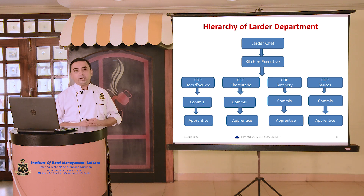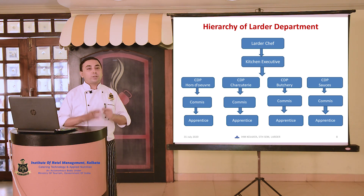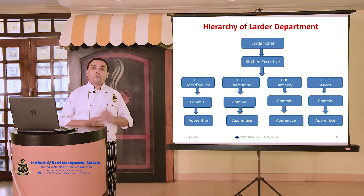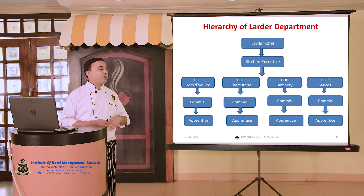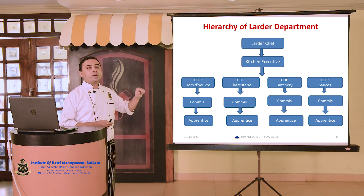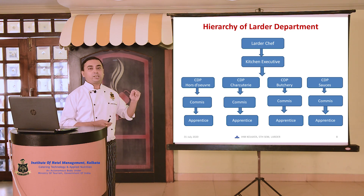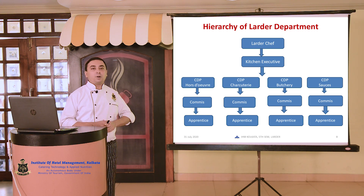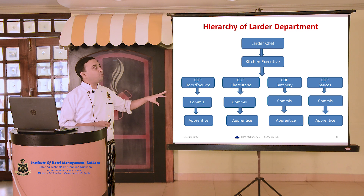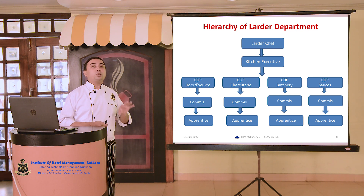Just after commis, the next position in the kitchen is apprentice, and after apprentice, the position is training staff. That's why at the beginning I told you to try to recollect your training time — because as training staff in the entire brigade, we are there to learn what is happening inside the kitchen. That is the objective, and that's why your position is very important to understand the functions of kitchen operations.